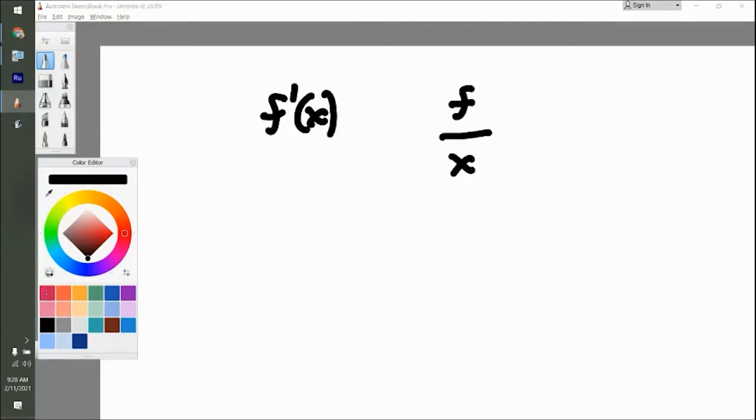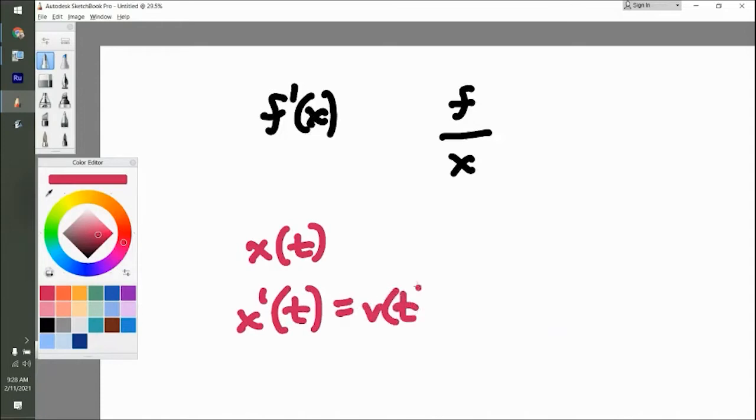So what I was talking about with physics here, if you do something like the position is x of t, if you did the derivative of this, so x prime of t, this is equal to velocity. Well, let's just say that the position was in meters. Well, velocity would be in meters per whatever the time is in. Well, the time, let's just say it's in seconds. It would be meters per second.